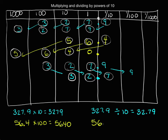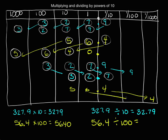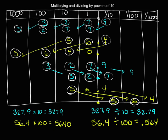Now let's divide 56 and 4 tenths by 100. Starting with 56 and 4 tenths — because we're dividing by 100, each of our digits is going to move to the right two places on our place value chart. We still have our decimal point. So 56 and 4 tenths divided by 100 becomes 564 thousandths. 5 tenths is one hundredth the size of 5 ones. 6 hundredths is one hundredth the size of 6 ones. 4 thousandths is one hundredth the size of 4 tenths.